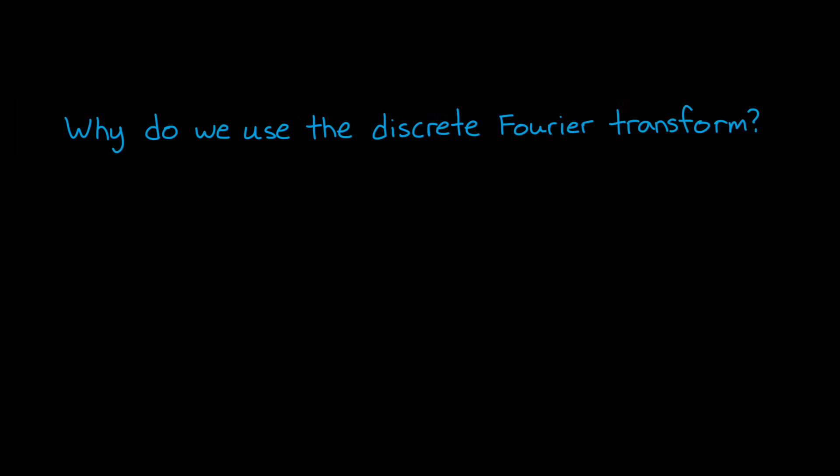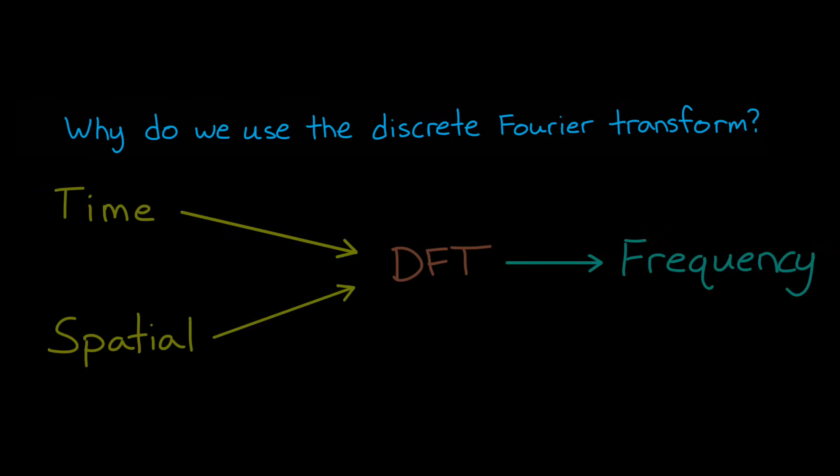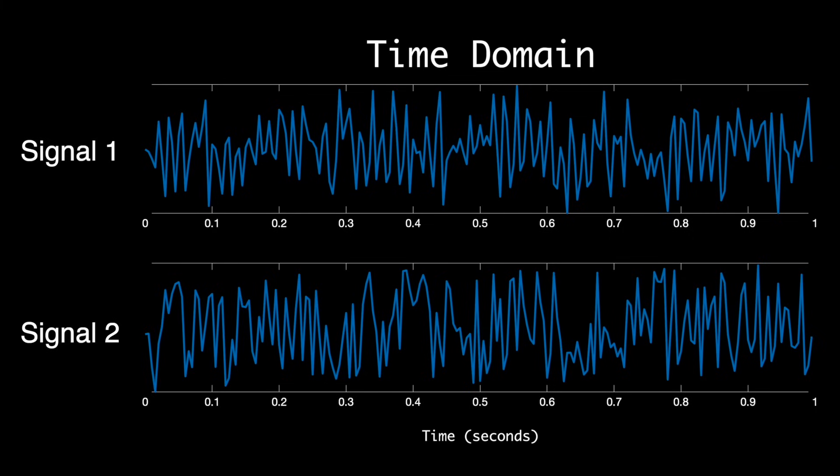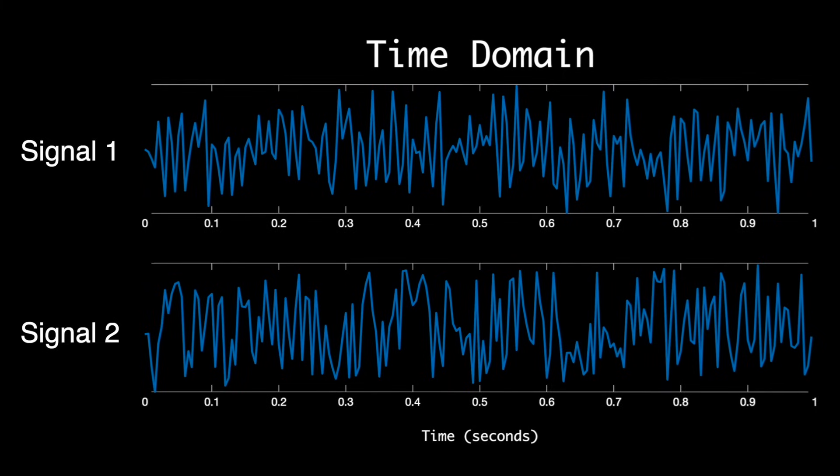So to begin, our first question we want to ask is why are we using the discrete Fourier transform? Well, the DFT transforms a signal from the time domain, or a spatial domain like distance, into the frequency domain. And one of the main reasons for making this transformation is because the features of a signal that we're interested in are not always obvious in the time or spatial domains. For example, here I have two time domain signals that are sampled at 200 hertz. And the question I have for you is, which of these has a significant 60 hertz component? It's not terribly obvious, right? They both look pretty similar.